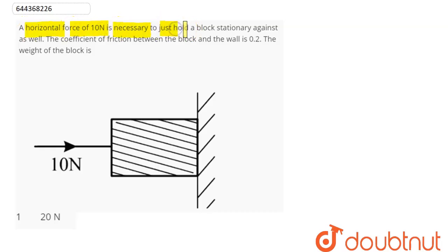10 newton is necessary just to hold a block stationary against a wall. The coefficient of friction between the block and the wall is 0.2. The weight of the block is?